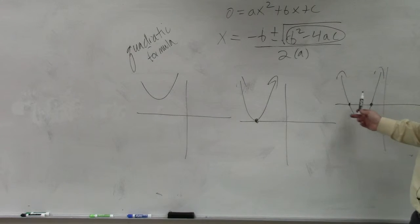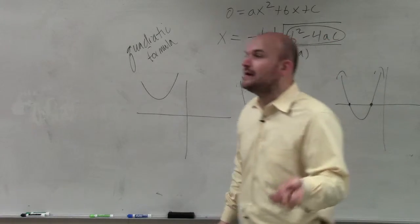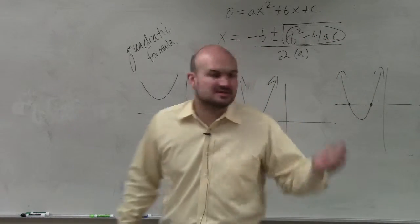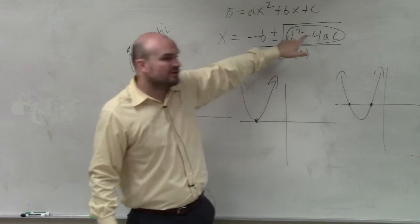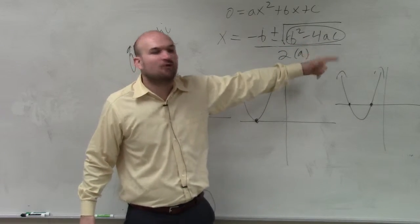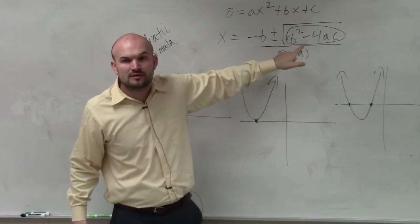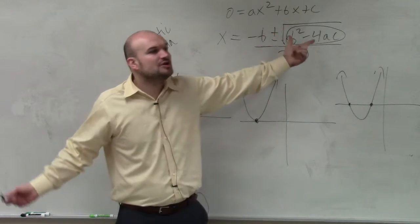Then what about if there's two solutions? Remember I said if it's a square number, then you have rational numbers. So let's pretend your discriminant is a square number. Say the number four. Can you take the square root of four? Yeah, it's plus or minus two, right?